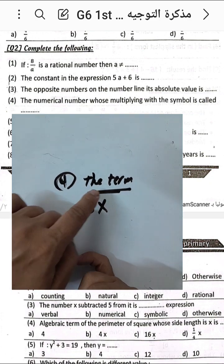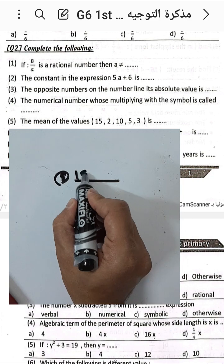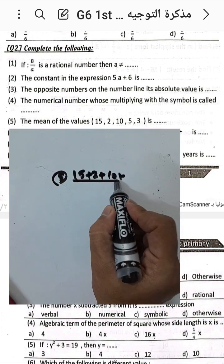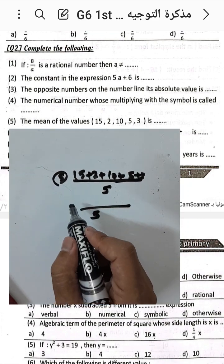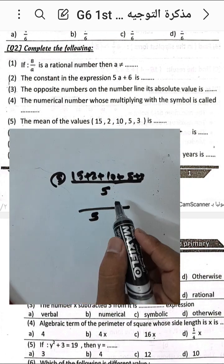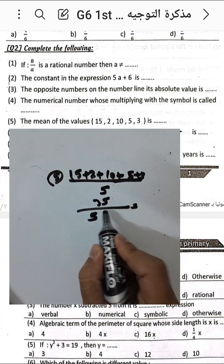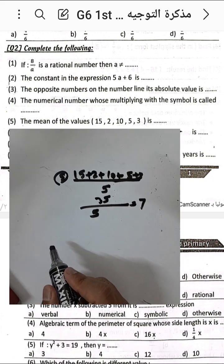Question number five: find the mean of the values. We add all values divided by the number of values. 15 plus 2 plus 10 plus 5 plus 3, divided by 5. That gives us 15 plus 2 equals 17, plus 10 equals 27, plus 3 equals 30, plus 5 equals 35. Then 35 divided by 5 equals 7. The mean is 7.